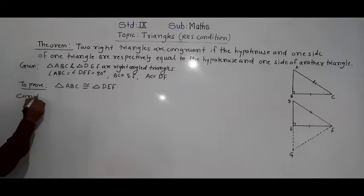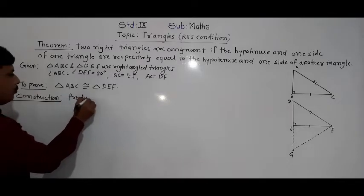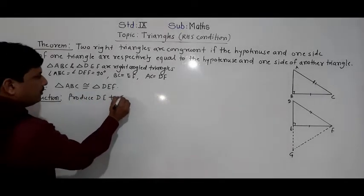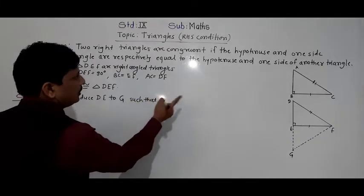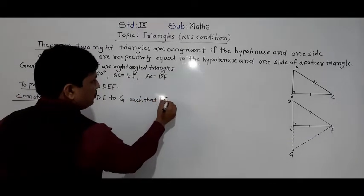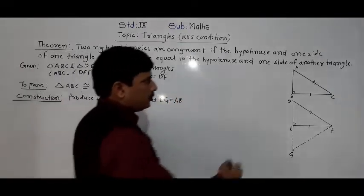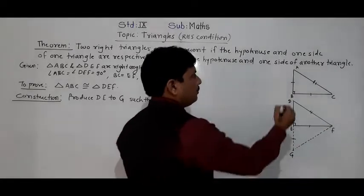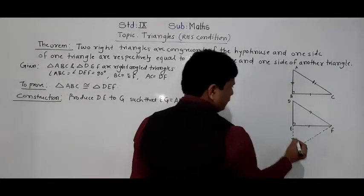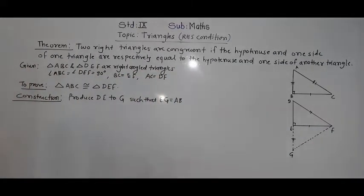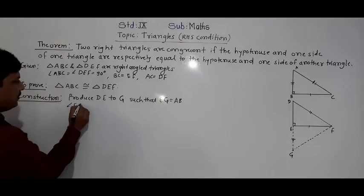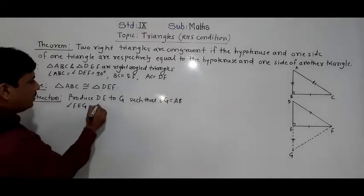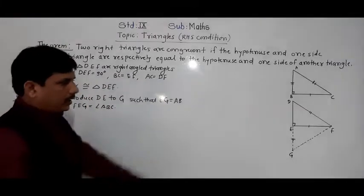For the construction, we write: produce DE to G such that EG is equal to AB, and angle FEG is equal to angle ABC — that is, 90 degrees. Both the angle and side are the same, and that construction has been done.